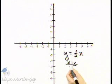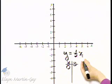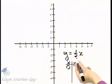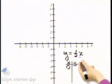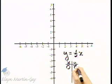For example, what if we let x be zero? If x is zero, y is equal to one-half times zero, and one-half times zero is zero.